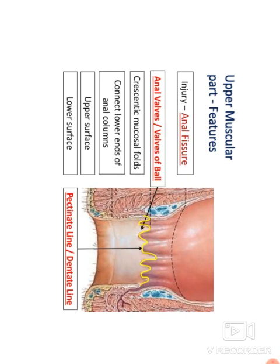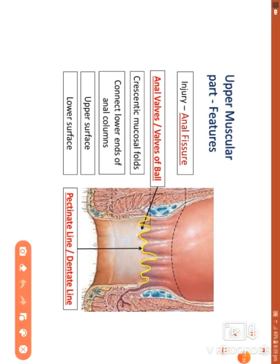The anal valves are connected by a continuous transverse line called the pectinate line or dentate line, shown in yellow in the figure. The lower parts of the anal valves are traversed by this continuous line. That covers the upper zone.